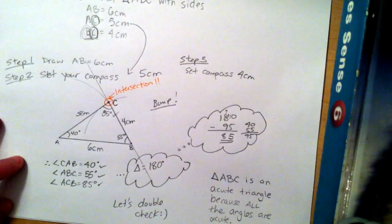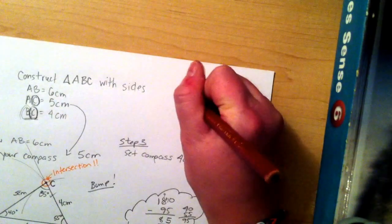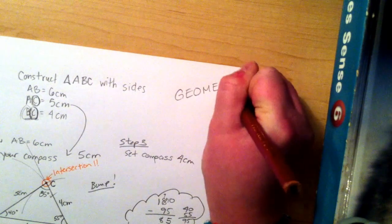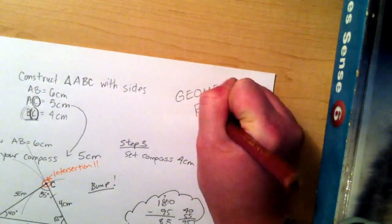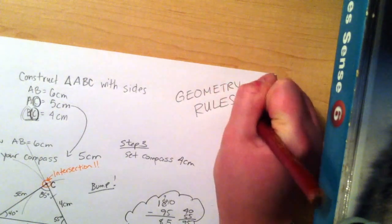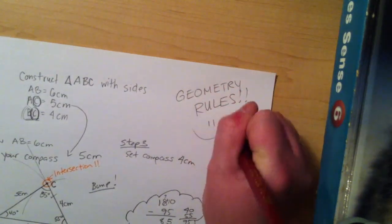And voila! That is how we construct triangle ABC with sides AB 6 cm, AC 5 cm, and BC 4 cm. Good luck with constructing your triangles.